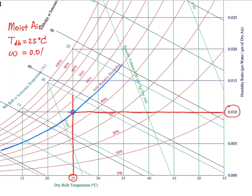Some psychrometric charts actually show a so-called comfort zone. This condition of 25 degrees dry bulb temperature and 50% relative humidity is one that most humans would feel comfortable to be in.